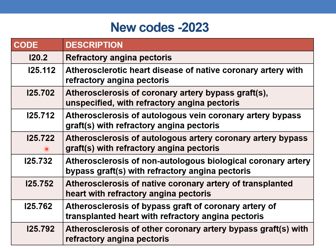I25.722 — atherosclerosis of autologous artery coronary artery bypass graft with refractory angina pectoris. I25.732 — atherosclerosis of non-autologous biological coronary artery bypass graft with refractory angina pectoris. I25.752 — atherosclerosis of native coronary artery of transplanted heart with refractory angina pectoris. I25.762 — atherosclerosis of bypass graft of coronary artery of transplanted heart with refractory angina pectoris. And finally I25.792 — atherosclerosis of coronary artery bypass graft with refractory angina pectoris.